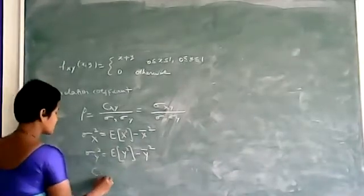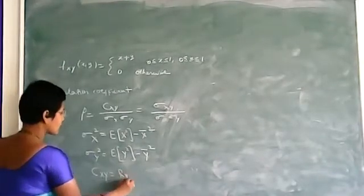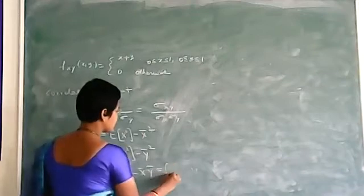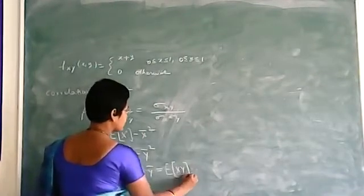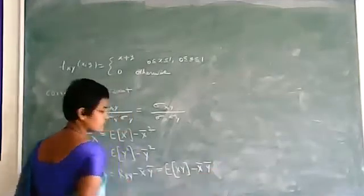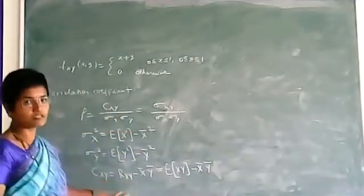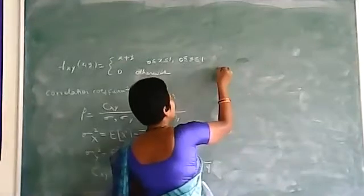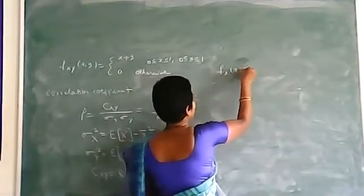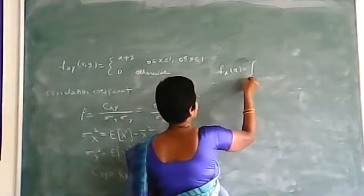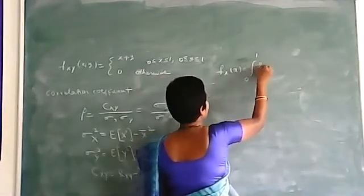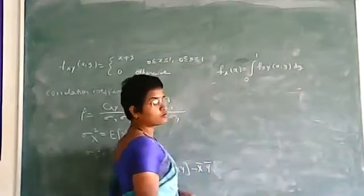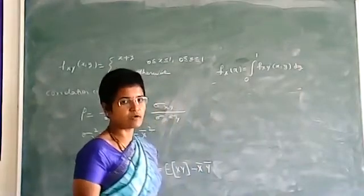Similarly, C(x,y) is equal to R(x,y) minus x̄·ȳ, where R(x,y) is the expected value of xy minus x̄·ȳ. To find sigma_x squared, it is the expected value of x squared minus x̄ squared. For finding x̄, we find f_x(x) by integrating with respect to y with limits 0 to 1.